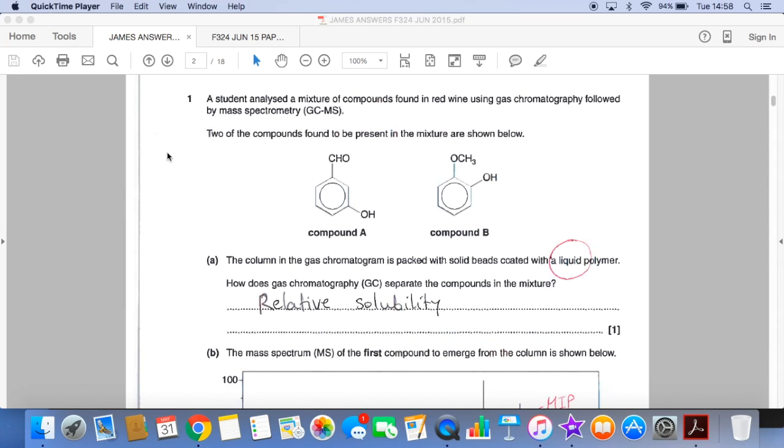So the answer is now part A, how does gas chromatography separate the compounds in the mixture? Well, the key to this question was the fact that the solid beads were coated with a liquid polymer. So the interaction between the compounds and the stationary phase, which is this liquid polymer, is by solubility. And so I would say relative solubility.